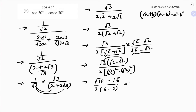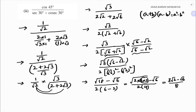Simplifying √18 = √(9×2) = 3√2. So the expression becomes (3√2 − √6) / 8. This is the final answer.